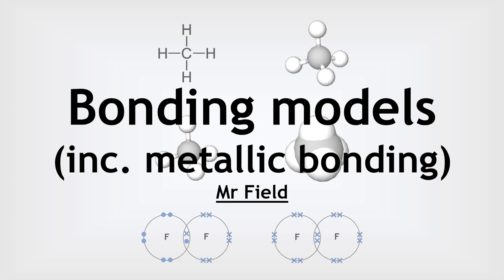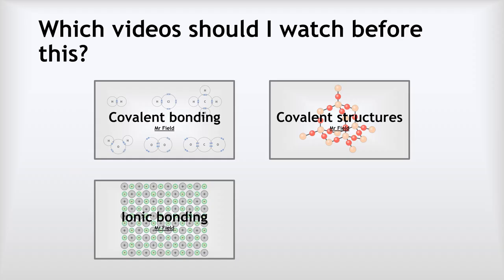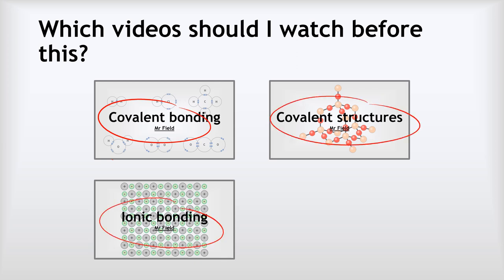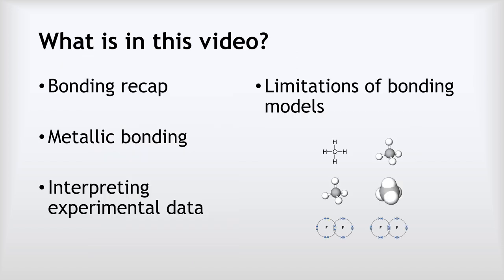Hello, this is Mr. Field and this is my video on bonding models including metallic bonding. Before you start this, make sure you're confident with covalent bonding, covalent structures, and ionic bonding. I've got videos on all of those if you need to revisit. In this video we will be looking at a general recap of each type of bonding, metallic bonding, interpreting experimental data, and the limitations of our models of bonding.